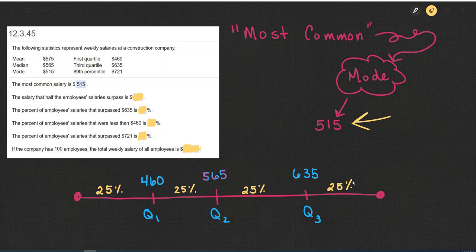So 25% of the salaries will range from $0 to $460. 25% of the salaries will range from $460 to $565, and so on. So 25% for $565 to $635, and 25% from $635 up to whatever the top salary is.